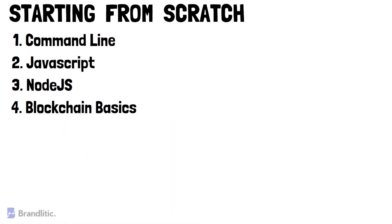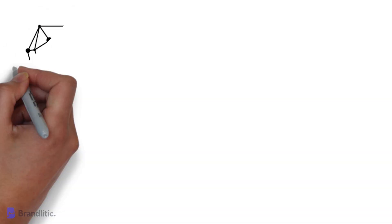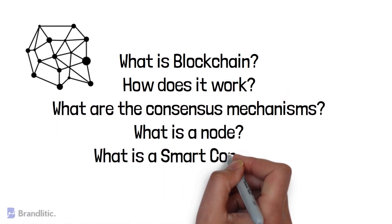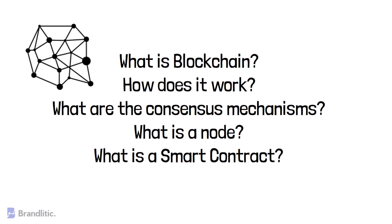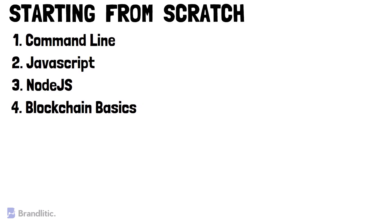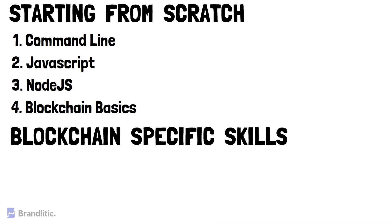4. Blockchain Basics. Once you're familiar with the first three steps, it's time to jump into blockchain technology and learn the basics. Try learning answers to questions like: What is blockchain? How does it work? What are the consensus mechanisms? What is a node? What is a smart contract? Understanding the basics of these questions is vital to creating useful blockchain applications. You can also subscribe to my channel to stay updated, as I frequently publish content related to blockchain. By now you've got some coding experience — to become a blockchain professional, you need to gain blockchain-specific skills for developing solutions on blockchain, and more specifically, the Ethereum ecosystem.